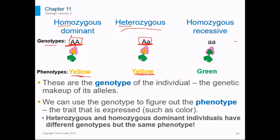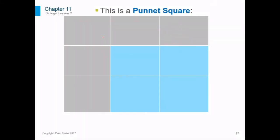Homozygous recessive has a different phenotype — it has the phenotype that's green because it only has green alleles; it has nothing else. Due to this principle of dominance, where you have dominant and recessive alleles, we can figure out the probability of any trait showing up in offspring if we know the genotype of the parents.